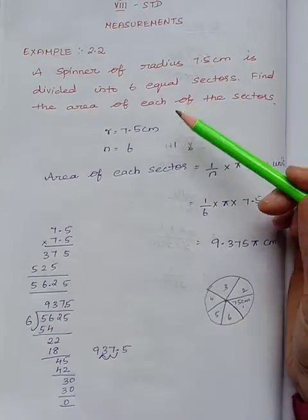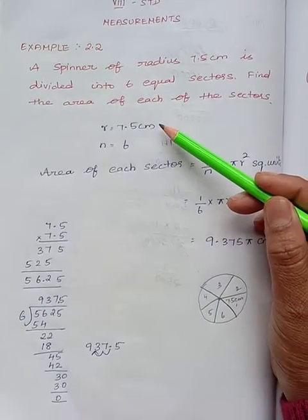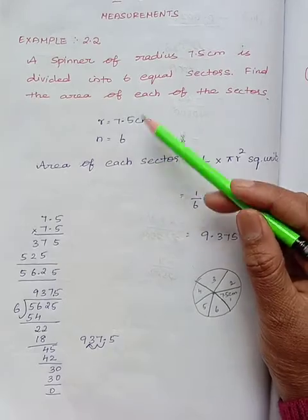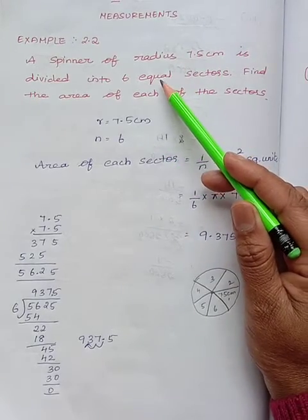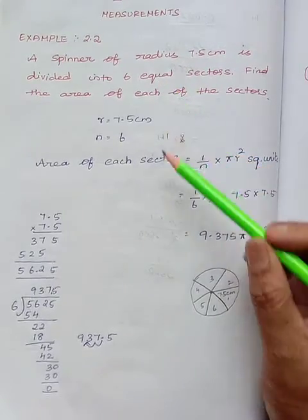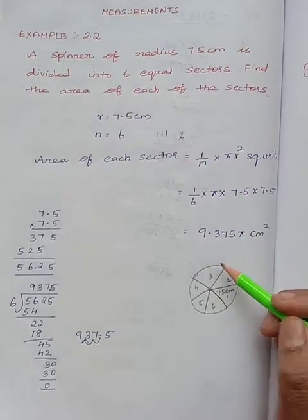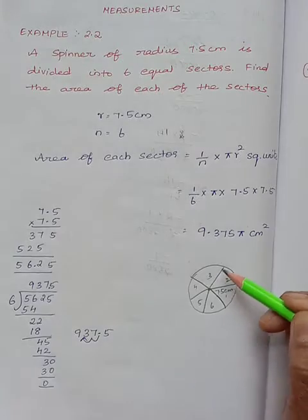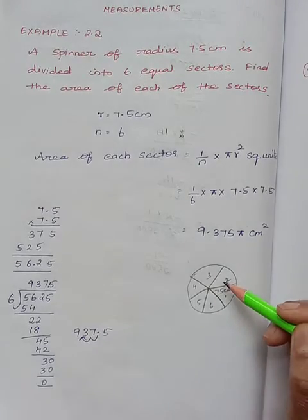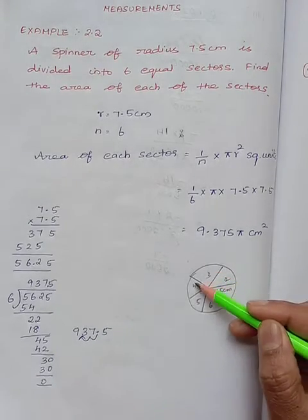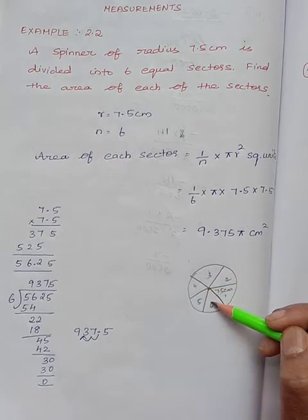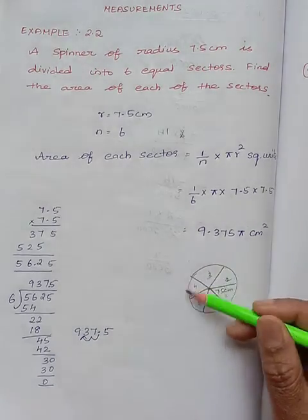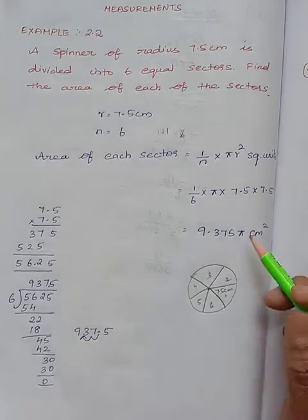Given: radius is 7.5 cm and we are dividing them into 6 equal sectors. So this is the spinner; they are divided into 1, 2, 3, 4, 5, 6 — 6 equal sectors.